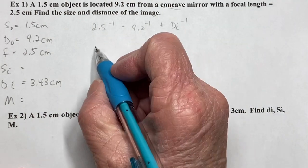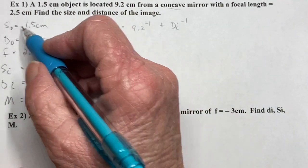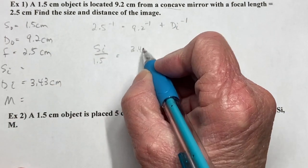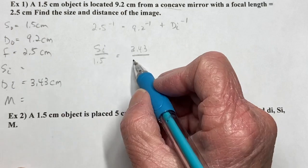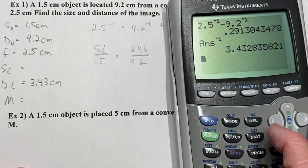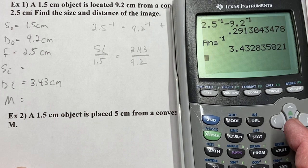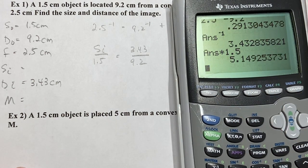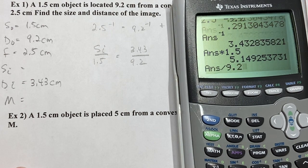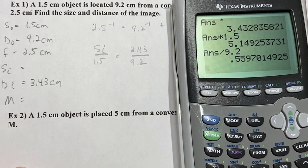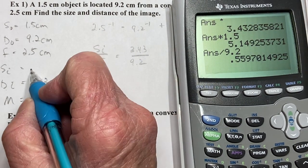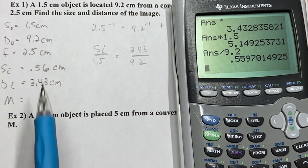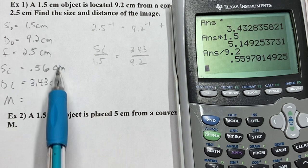That's di 3.43 centimeters. All right, then we're going to go si over so, which is 1.5 equals di, which is now 3.43 over do 9.2. So the best way to solve these, just cross multiply. So I'm just going to leave this answer in here. I'm going to times it by 1.5, and then divide it by 9.2, and we'll call it 0.56. So you don't have to draw. You can already see the size of the image compared to the object. It's smaller.